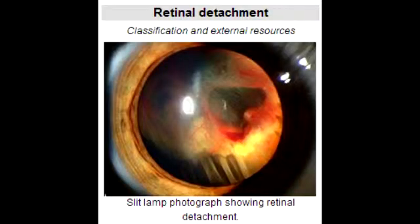In retinal detachment, if there is separation of the neurosensory layer of the retina from the outermost pigmented epithelium, this will lead to degeneration of the photoreceptors, and that will eventually lead to vision loss.